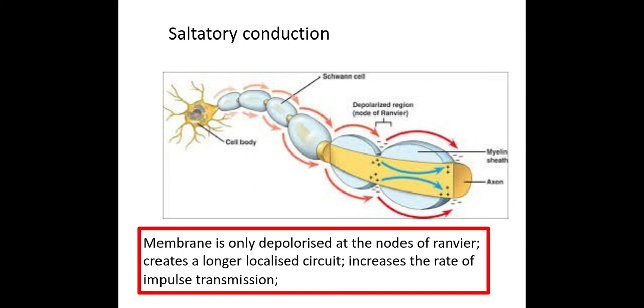It creates a longer localized circuit, which means the movement of ions can only occur where the arrows are. If the Schwann cell wasn't there, it would be occurring all the way along in shorter circuits, and therefore it increases the rate of impulse transmission.